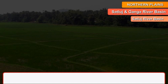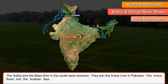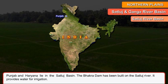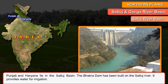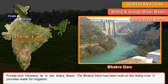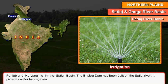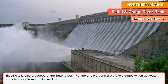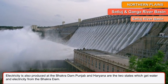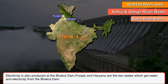The Satluj and the Beas flow in the southwest direction and join the Indus River in Pakistan. The Indus flows into the Arabian Sea. Punjab and Haryana lie in the Satluj Basin. The Bhakra Dam has been built on the Satluj River. It provides water for irrigation, and electricity is also produced there. Punjab and Haryana both receive water and electricity from the Bhakra Dam.